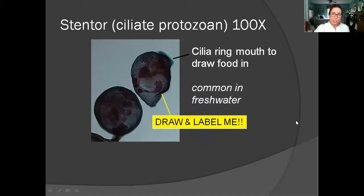This is another ciliate protozoan — this is a stentor. Stentors come in lots of different shapes, but one thing they have in common is a ring of cilia around their mouth to draw food in. This is just one single cell big — these are unicellular organisms, as are the paramecia. They're really common in freshwater.